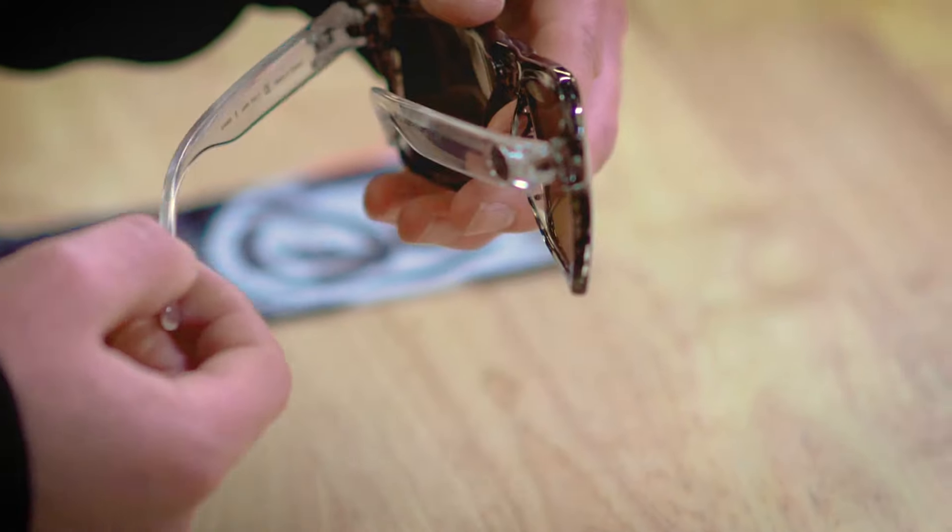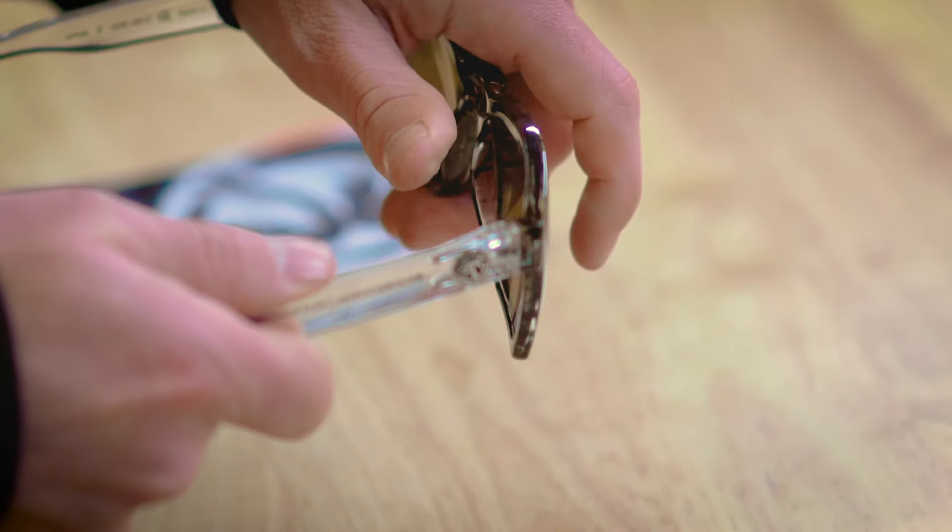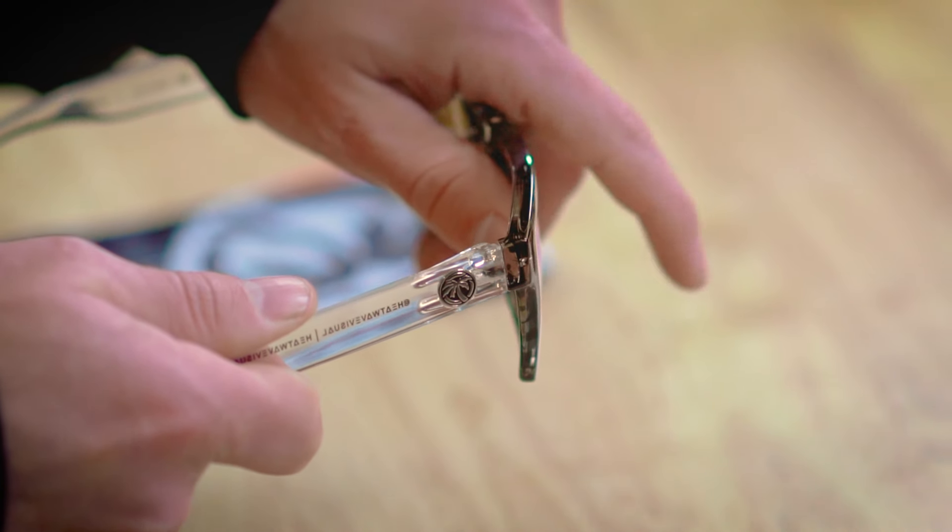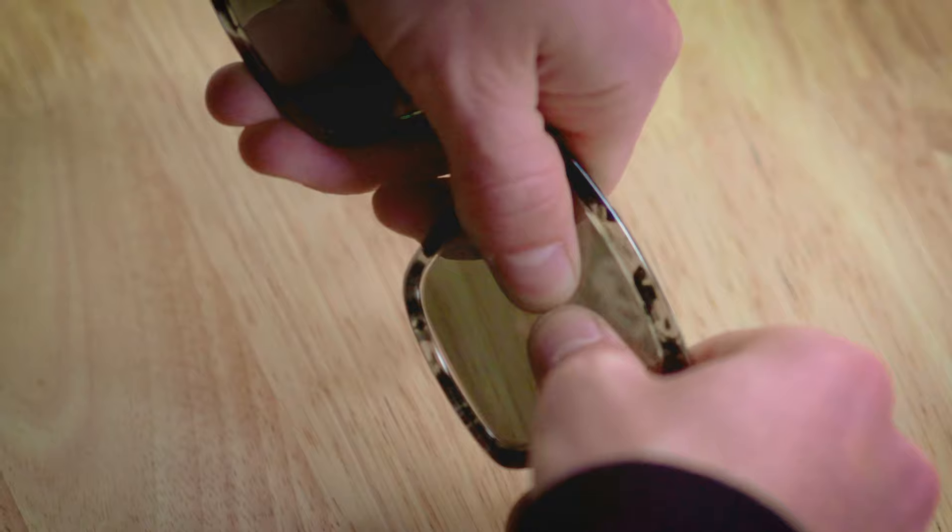Now removing the lenses, rotate the frames facing away from you again and open up the arms. Put both your thumbs in the center of the lens while your fingers hold onto the frame. Then give a good hard push and it'll pop out.